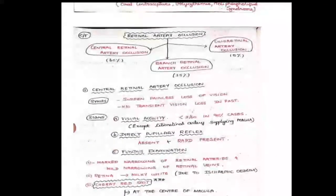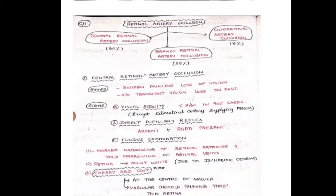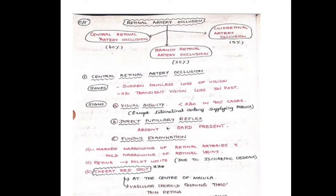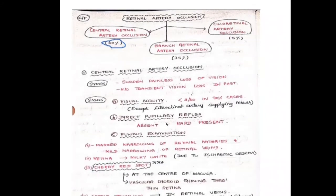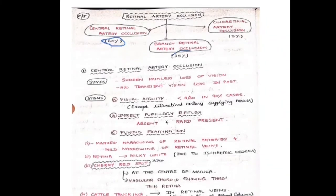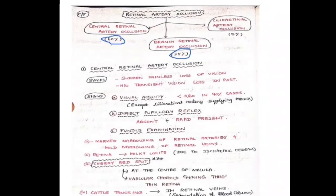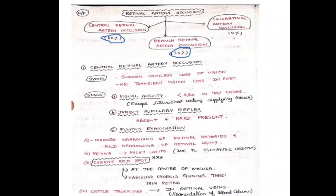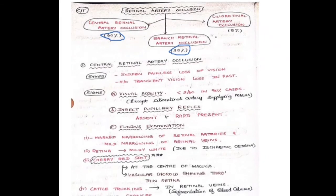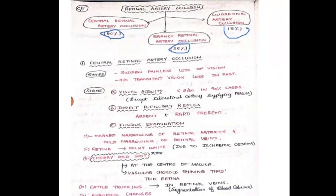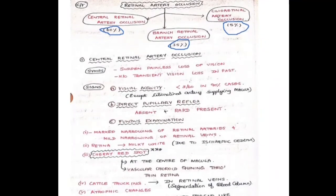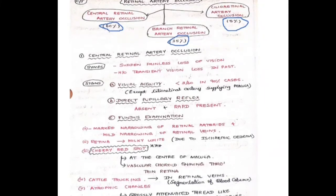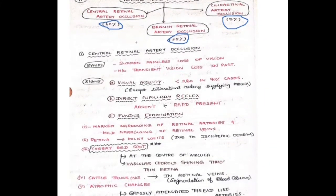Regarding clinical features: the central retinal artery accounts for 60% of retinal supply, and its occlusion causes 60% of cases. Branch retinal artery occlusion accounts for 35% of cases. Cilio-retinal artery occlusion accounts for 5% and is rare, as this artery is not present in everyone. Since the cilio-retinal artery mainly supplies the macular region, if it is unaffected the macula will be spared.